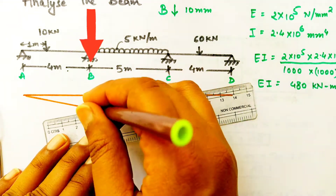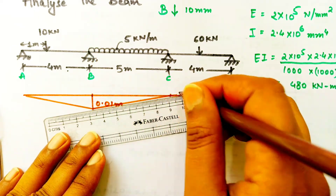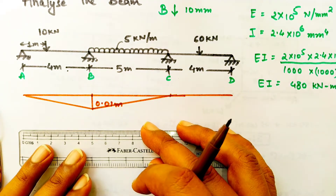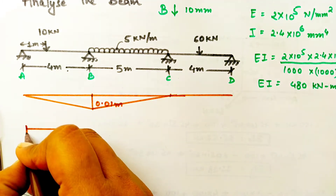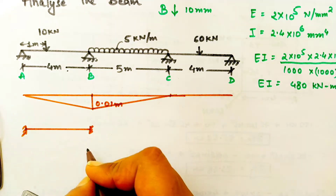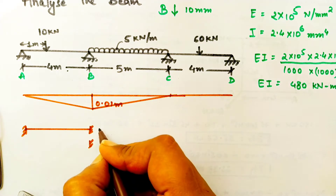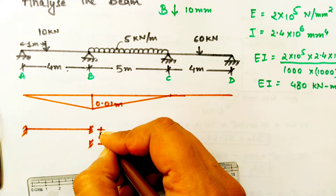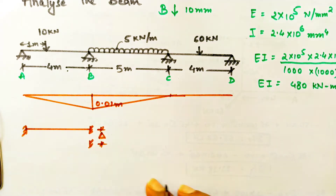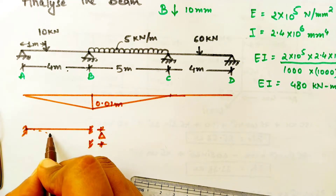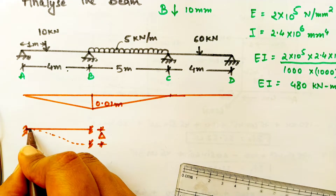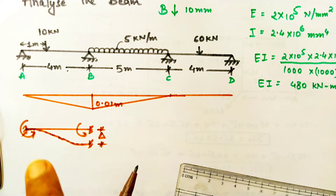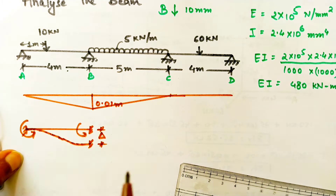For understanding the effect of sinking, we will look at a small example. Let's take a fixed beam with one end sinking down by a delta amount — the shape of the beam will be something like this, and the moments generated at the ends will be somewhat like this.